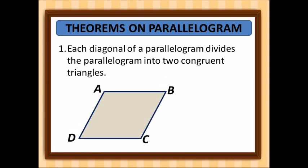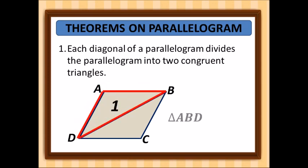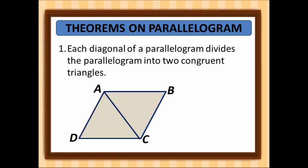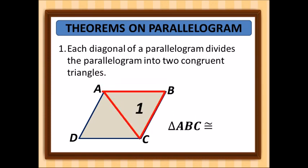For parallelogram ABCD, if the diagonal is BD, then triangle ABD is congruent to triangle BCD. If the diagonal is AC, we also have two triangles: triangle ABC is congruent to triangle ACD.